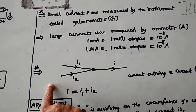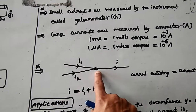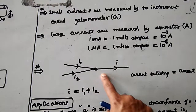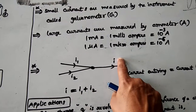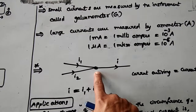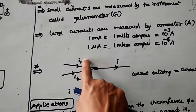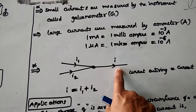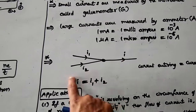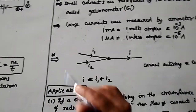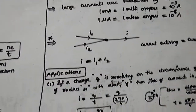Two currents i1 and i2 are coming and meeting at a junction point. They combine and a current i comes out. So at this junction, current entering is i1 + i2 and current leaving is i, giving i = i1 + i2. You will get numerical problems based on this as well.